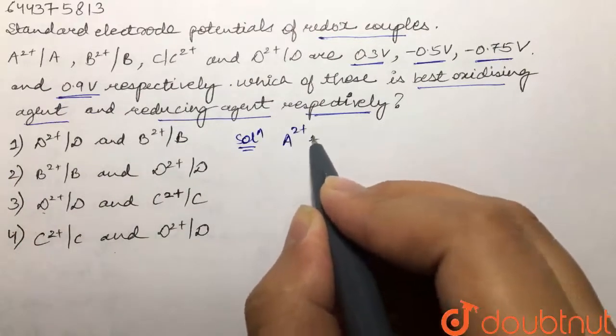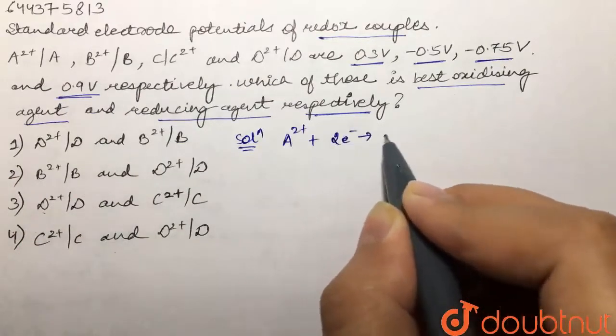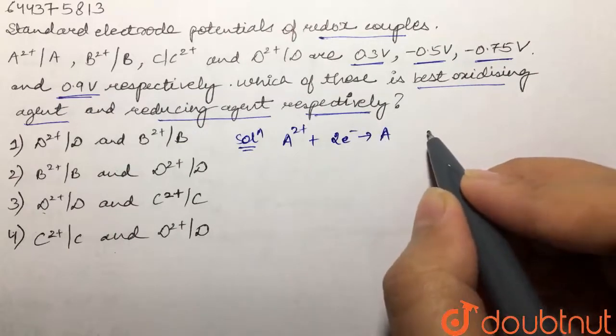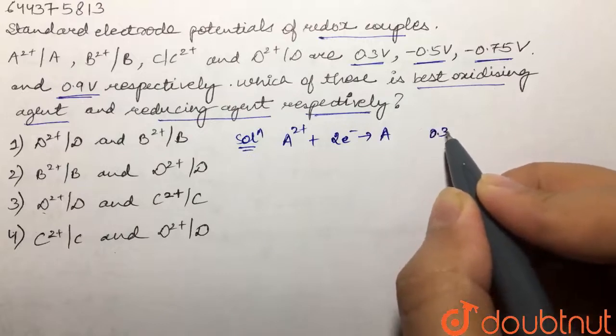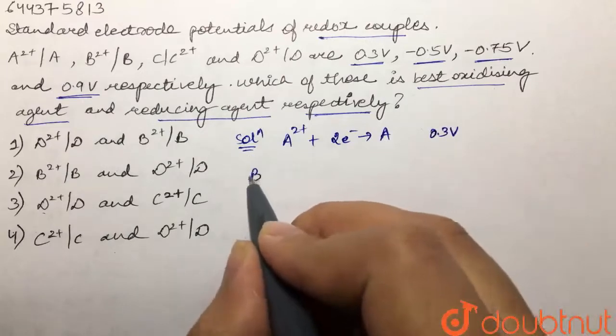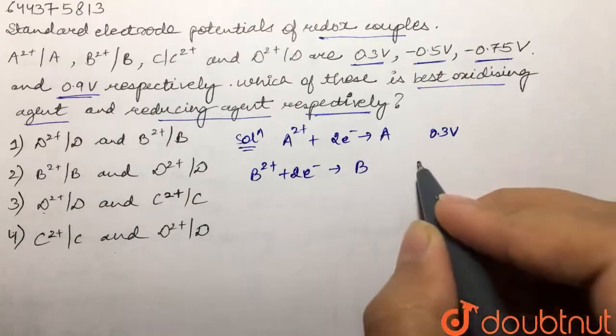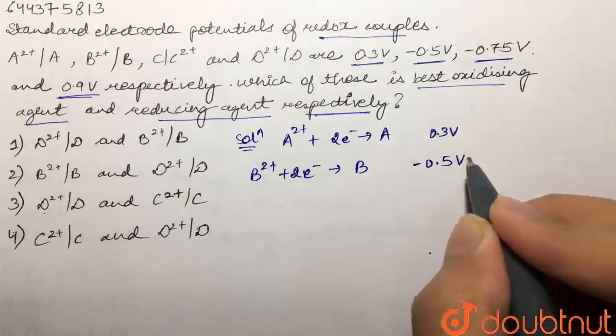First is A²⁺ after gain of 2 electrons is getting converted into A and the electrode potential given for this is 0.3V. Then for the next, we have B²⁺ is becoming B and for this we have -0.5V.